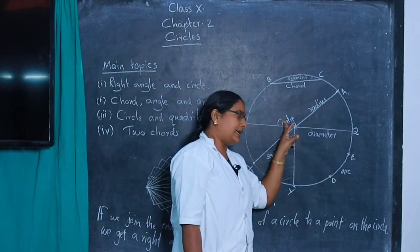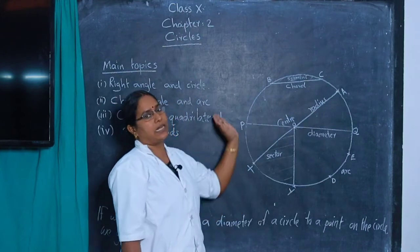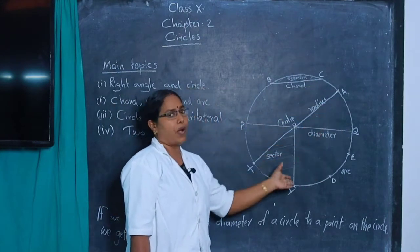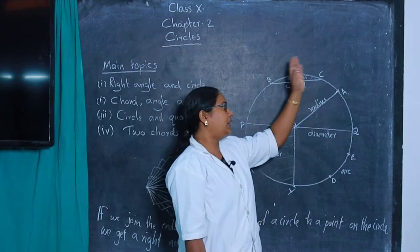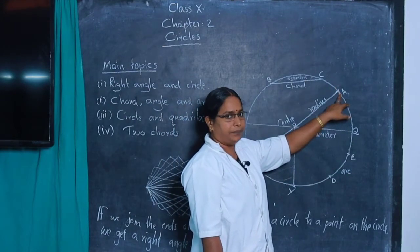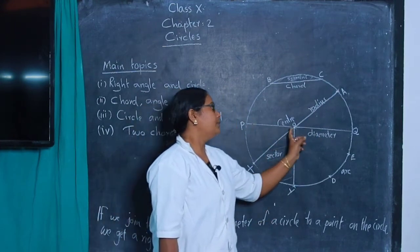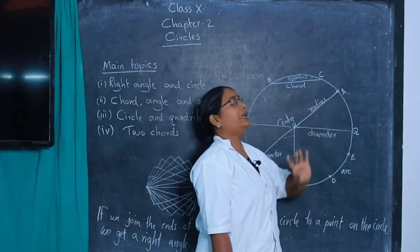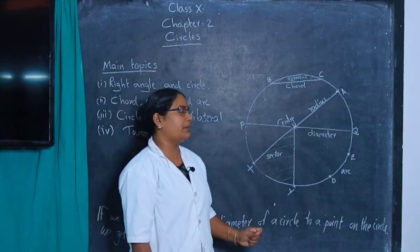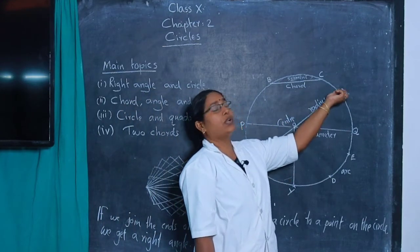A circle has an infinite number of points. Take any one point on the circle and join it to the center. That line segment is called a radius. The definition: a line segment joining the center and any point on the circle is called a radius.